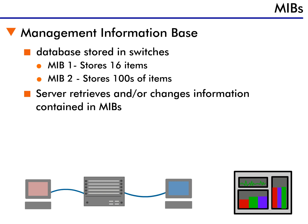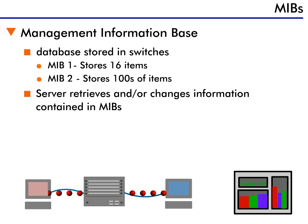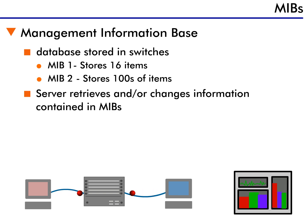Early generation network devices only supported a database containing 16 information items. This was called MIB 1, and it was not very useful. Current devices support MIB 2, which supports hundreds of information items and is much more useful when managing a device.